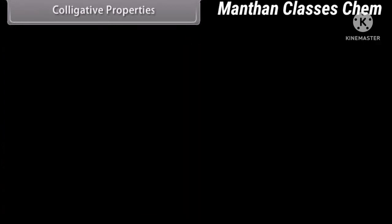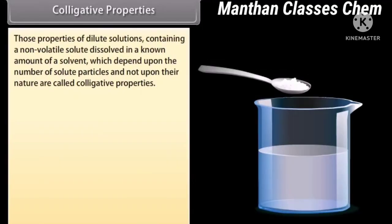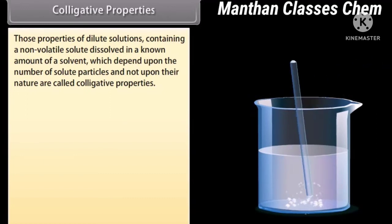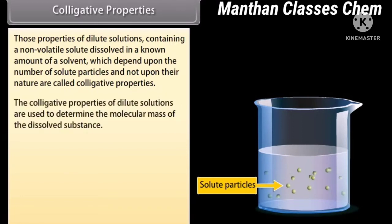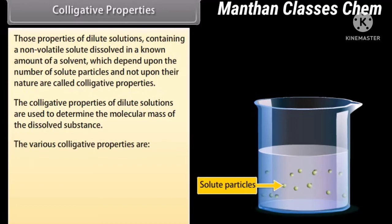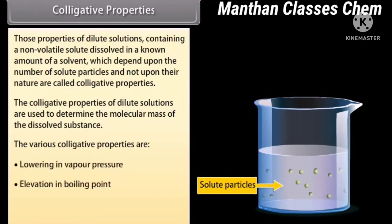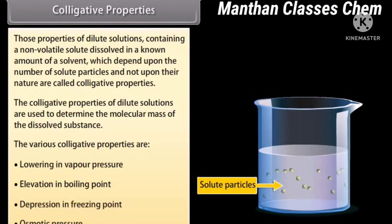Colligative Properties: Those properties of dilute solutions containing a non-volatile solute dissolved in a known amount of solvent, which depend upon the number of solute particles and not upon their nature, are called colligative properties. These are used to determine the molecular mass of the dissolved substance. The various colligative properties are: lowering in vapor pressure, elevation in boiling point, depression in freezing point, and osmotic pressure.